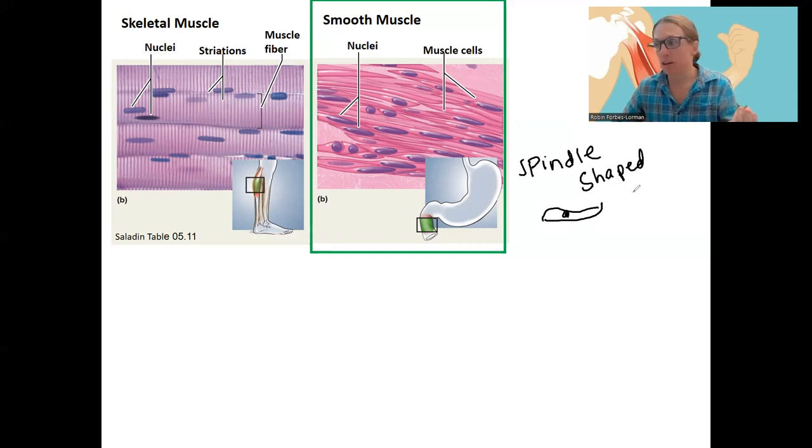There's no striations because there's no sarcomeres. There are overlapping thick and thin filaments, but the myosin is much shorter with more myosin heads. So it just looks a little different. I'll show that in just a minute. But there still are thick and thin filaments, but they're arranged differently. So you don't see those striations due to the sarcomeres.